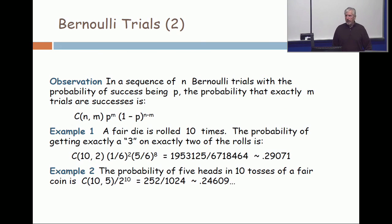Now, here is an important formula that says if we have Bernoulli trials, and we make a total of n trials, with the probability of success being p, then the formula for the probability that exactly m of the trials are successes is the binomial coefficient, C(n,m), times p to the m, times (1-p) to the (n-m).